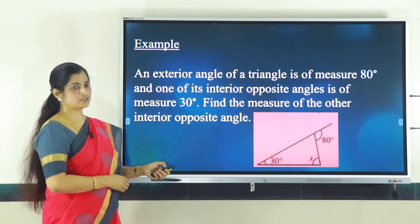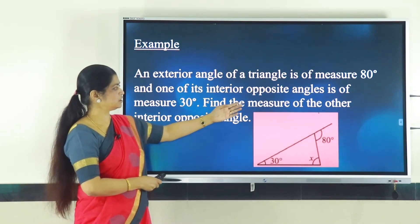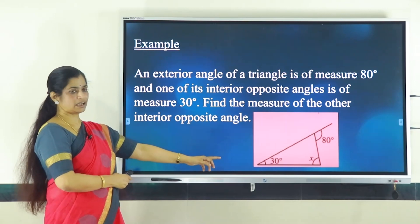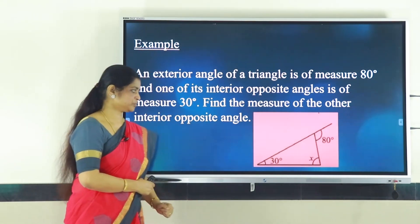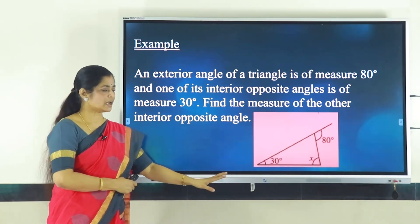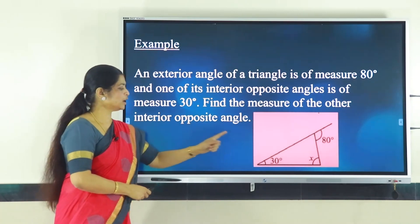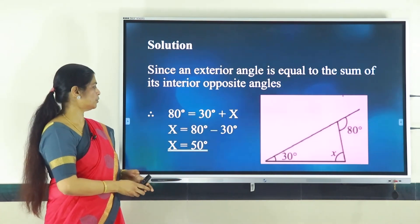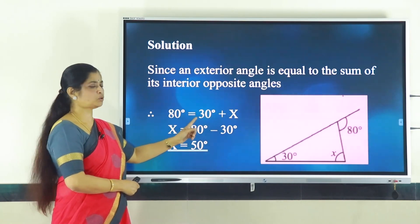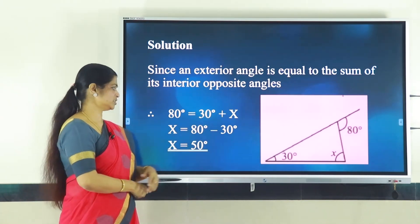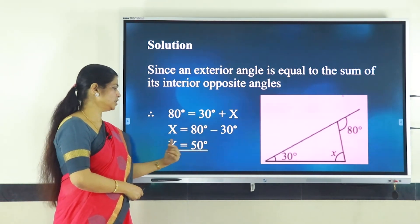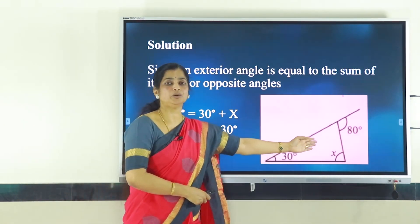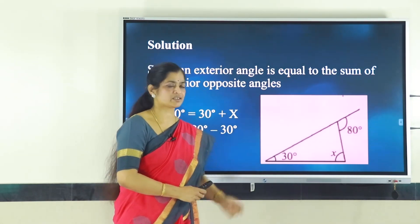Let us see an example: an exterior angle of a triangle measures 80 degrees. The interior opposite angles are 30 degrees and x degrees. Applying the property: 80 = 30 + x, so x = 80 − 30 = 50 degrees. Verification: 30 + 50 = 80, which equals the exterior angle.